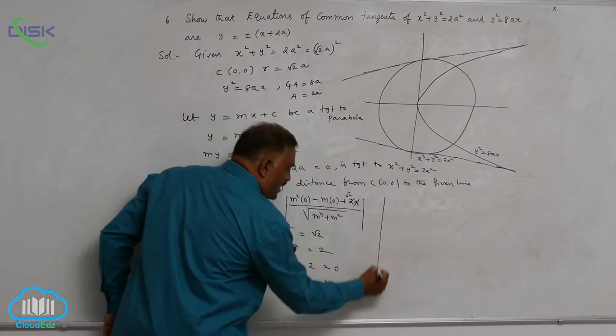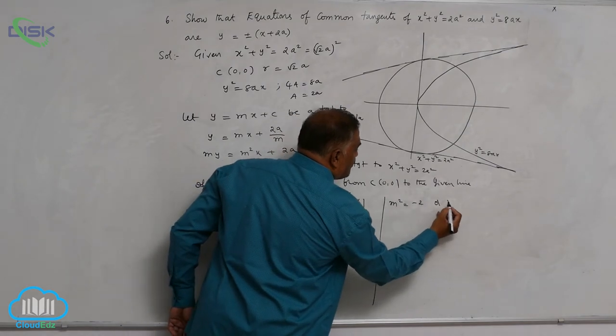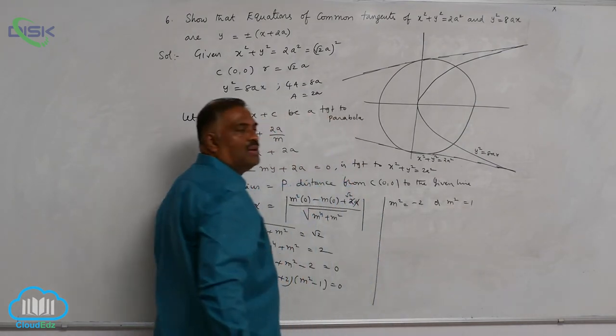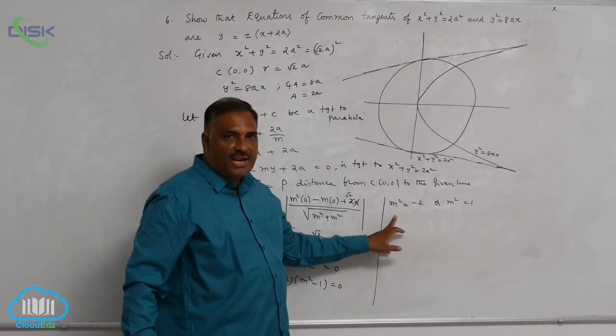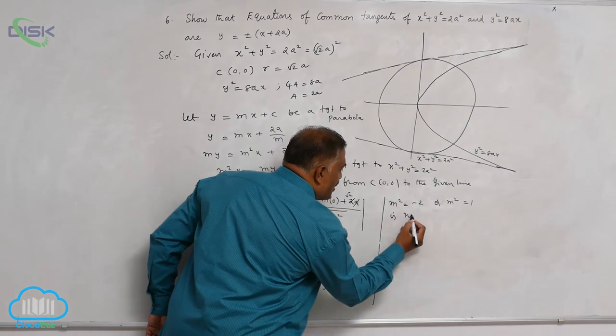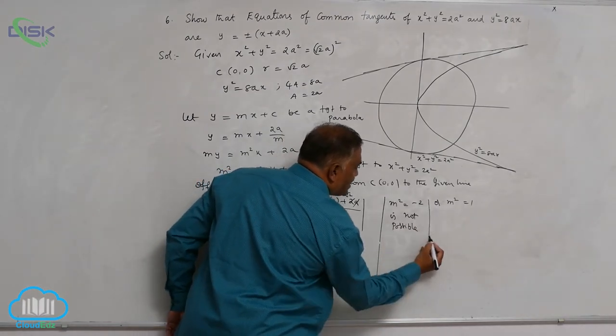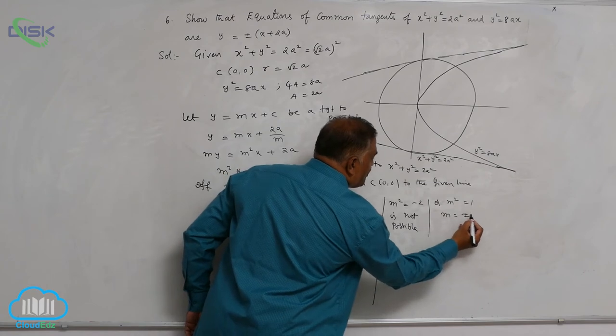So you can check very clearly m square is equal to minus 2 or m square is equal to 1. We know that square of a number can never be negative. So this is not possible. So automatically the other chance is m is equal to plus or minus 1.